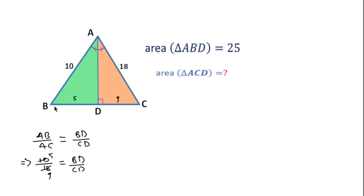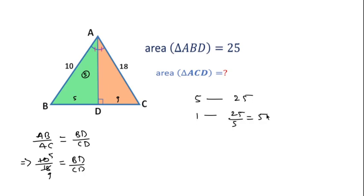The base ratio is 5 to 9. There is an important concept: if the heights of two triangles are the same, their areas are divided according to their bases. Here AD is the common height, so the green and orange triangles have the same height and their areas are divided by their bases. For base 5 the area is 25, so for base unit 1 the area is 25 divided by 5 equals 5. For base 9, the area is 9 times 5 equals 45. So the area of the orange triangle ACD is 45.